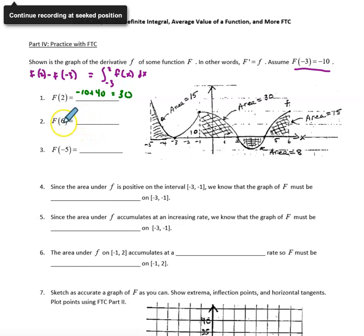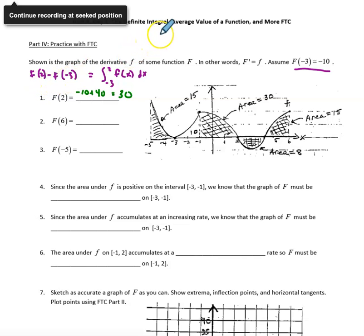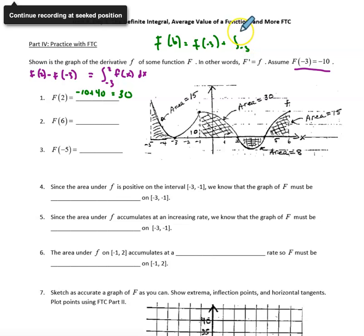I can do that each time. The integral from negative 3 to 6, for example, gives me big F of 6 minus big F of negative 3. It would be helpful to rewrite the fundamental theorem of calculus equation as: big F of b equals big F of negative 3 plus the integral from negative 3 to b of little f. I'm going to use this equation to answer the next two questions.